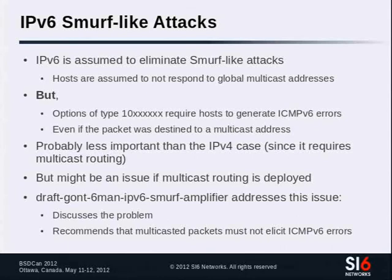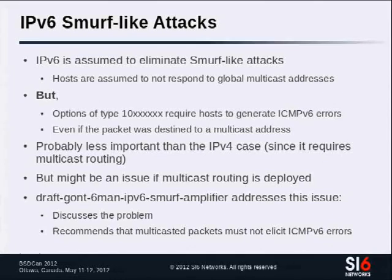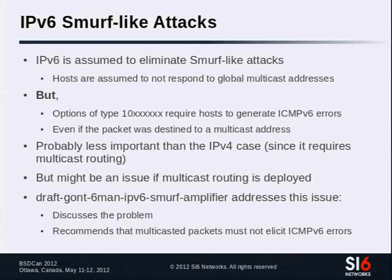Regarding amplification attacks: while IPv6 hosts are required to ignore ping packets sent to multicast addresses, there are specific packet types that generate responses even when sent to multicast addresses — for example, packets with unrecognized options of type 1 followed by arbitrary content. Our proposal is to ignore those packets rather than sending error messages in response, since in an amplification attack any response to a multicast-addressed packet provides amplification.